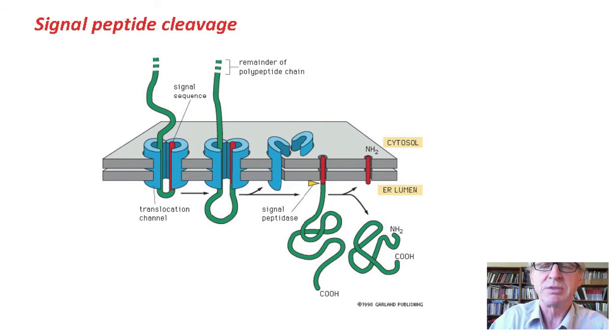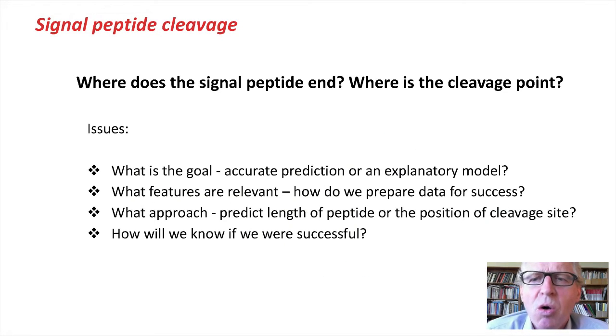called the signal peptide, they open up a translocation channel that allows the protein to pass through the membrane. And in so doing, the signal peptide portion gets cleaved off. So the signal peptide is kind of like a key that opens a door for a protein, and if we know what the key is, it gives us an idea as to what the function of the protein might be. So we want to predict where the signal peptide ends. Where is the cleavage point?